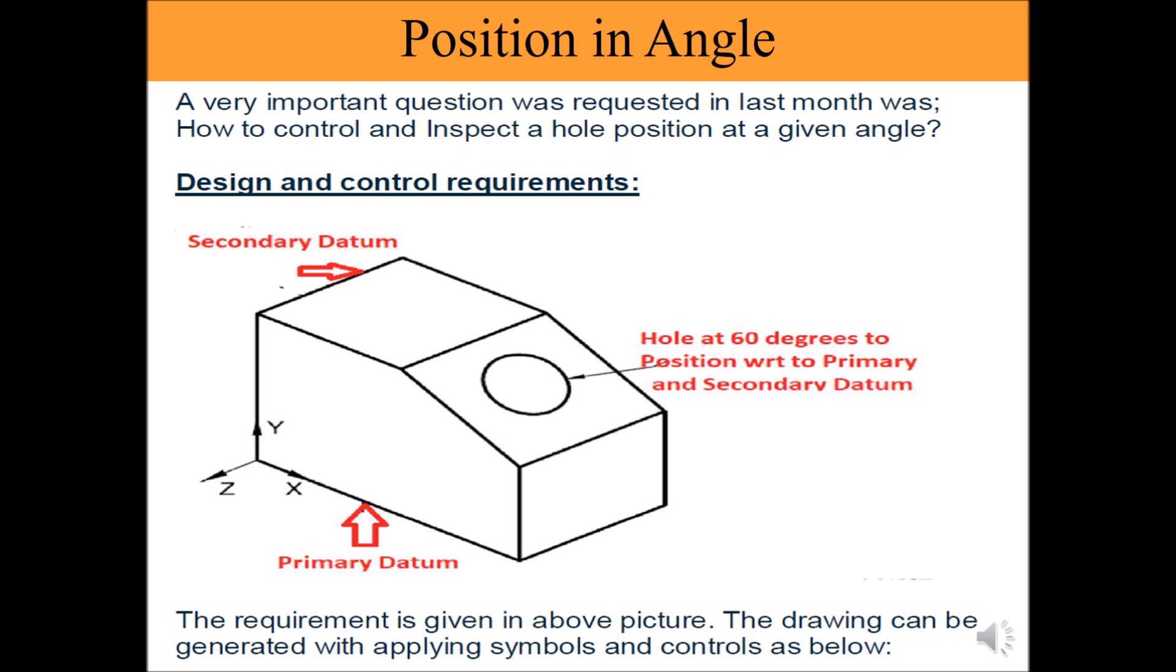Please refer to the given picture of a part. In this part one of the surfaces is inclined with the other surface at 60 degrees. Let us take the objective that on this inclined surface a hole needs to be produced as we see in the picture.